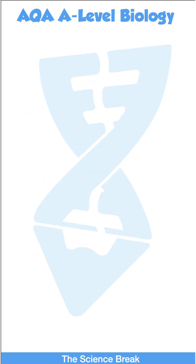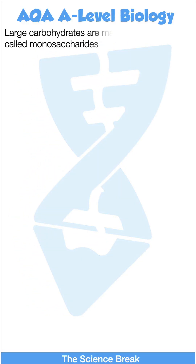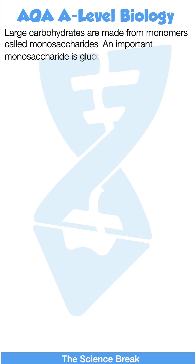This is for AQA A-level biology. Large carbohydrates are made from monomers called monosaccharides. An important monosaccharide is glucose.